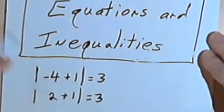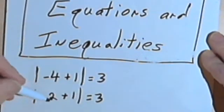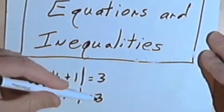If it's already positive, like 2 plus 1, then I don't have to change anything. So the absolute value of 2 plus 1 equals 3.